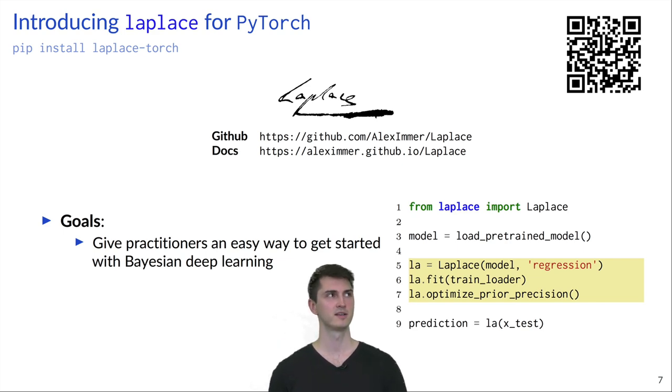Our library is called Laplace. You can simply install it via pip install laplace-torch. And you can see here the signature of Laplace himself. So apparently, he also approves of our library. The main goal of the library is to make Laplace approximations accessible in deep learning. More specifically, we want to enable practitioners to get easily started with Bayesian deep learning. We want to provide a strong baseline for Bayesian deep learning researchers and also enable new methods. On the figure, you can see how easy it is to apply the library. It only takes a few lines of code and you get your Bayesian deep learning method.